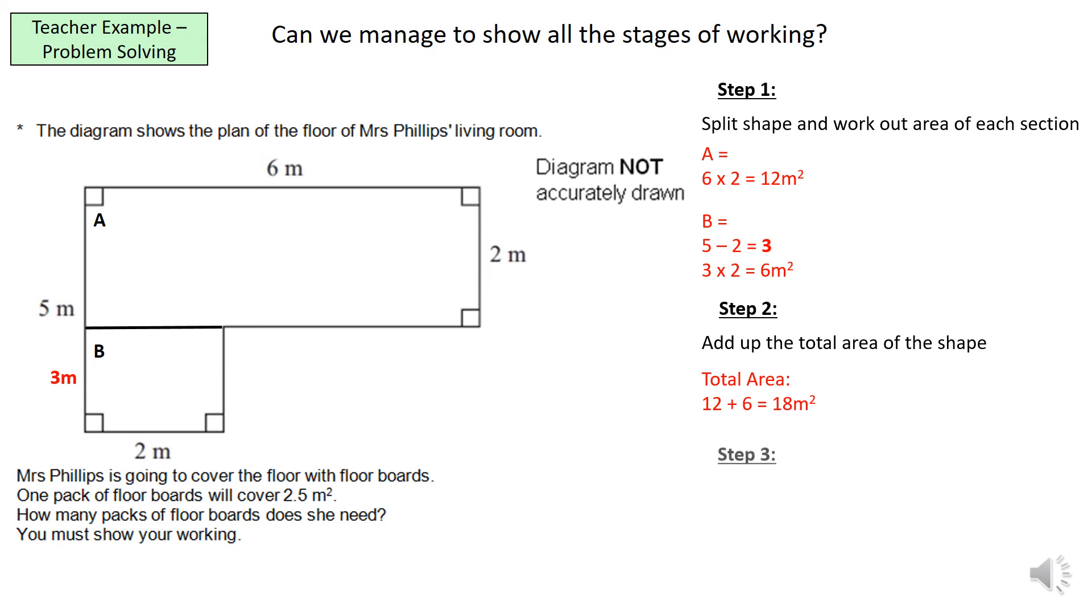Now this is the key part, step 3. We need to divide the total, which is 18 meters squared, by the amount that one pack covers. So we're doing 18 divided by 2.5 and that equals 7.2. Now if we were to put our final answer that Mrs. Phillips needs 7.2 packs, that would be incorrect. Okay? We would lose a mark because there's no such thing as 0.2 of a pack. So we need a whole number. Now the question to ask is, if we say Mrs. Phillips needs 7 packs, will she have enough floorboard to cover the entire living room?